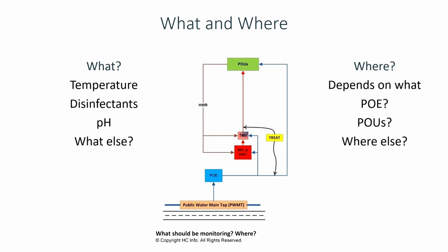Besides points of entry and points of use, where else? For temperatures, for example, where might you also test? Hot water return? Yeah — water heater outlet, or mixing valve outlet. Back to those medical tests: you could think about temperature, disinfectants, pH, and probably flow as analogous to monitoring exercise and diet for cholesterol. If you get off your diet for a day or skip a workout, it's not like death is around the corner. It's something that over time and cumulatively can affect the cholesterol results. That's how you would look at temperatures, disinfectants, pH, and flow.